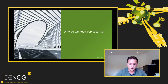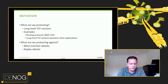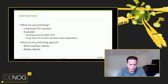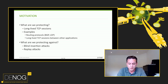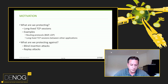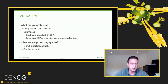So the first question is: why do we need TCP security at all? We're trying to protect long-lived TCP sessions — for example, a BGP session or an LDP session. But it could also be RPKI RTR sessions. It's defined in the RFC for RPKI RTR that transport security should be used. However, that wasn't implemented widely yet. There are a few options like SSH, TLS, MD5, but also TCP AO is mentioned.